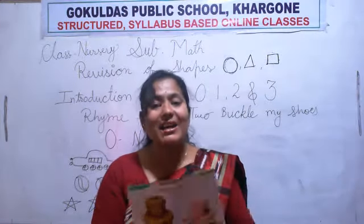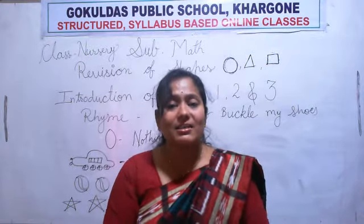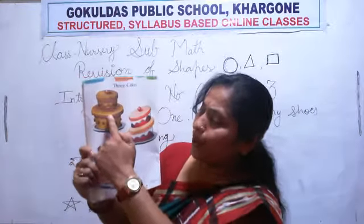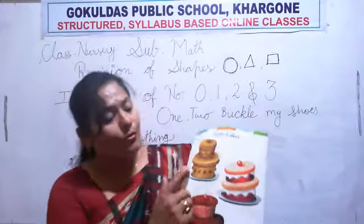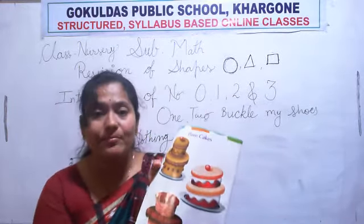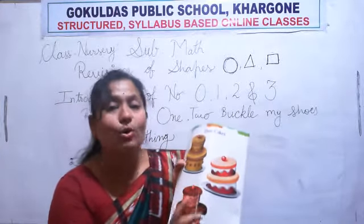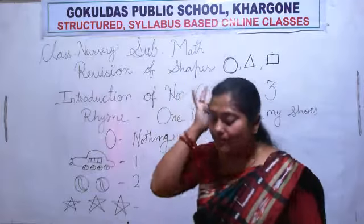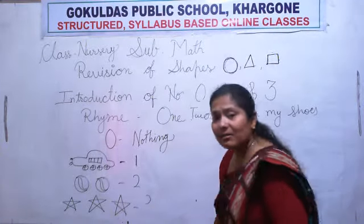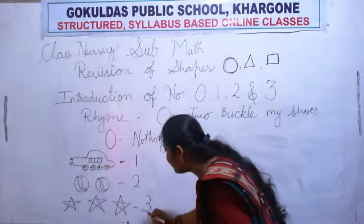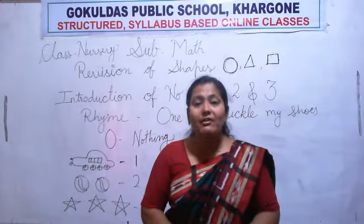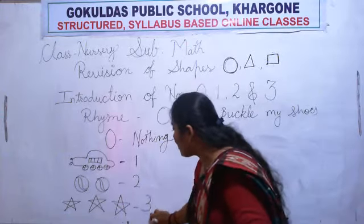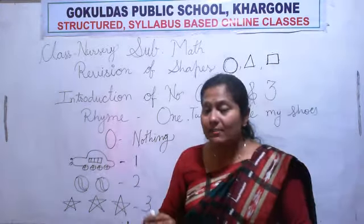Do you like cake? Yes! All of you like cake? Yes! See here — how many cakes are here? One, two, three. How many cakes? One, two, three. Now, how to write number 3? First make a half curve, and again make a half curve — two half curves make number 3.